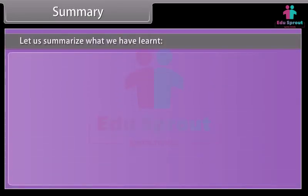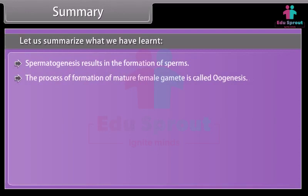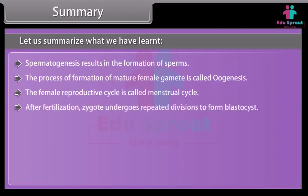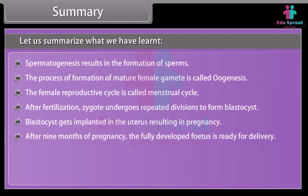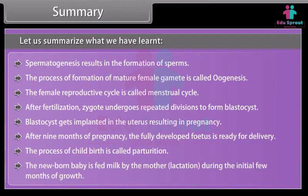Let us summarize what we have learned. Spermatogenesis results in the formation of sperms. The process of formation of mature female gamete is called oogenesis. The female reproductive cycle is called the menstrual cycle. After fertilization, the zygote undergoes repeated divisions to form a blastocyst, which gets implanted in the uterus resulting in pregnancy. After nine months of pregnancy, the fully developed fetus is ready for delivery — the process of childbirth is called parturition. The newborn baby is fed milk by the mother through lactation during the initial few months of growth.